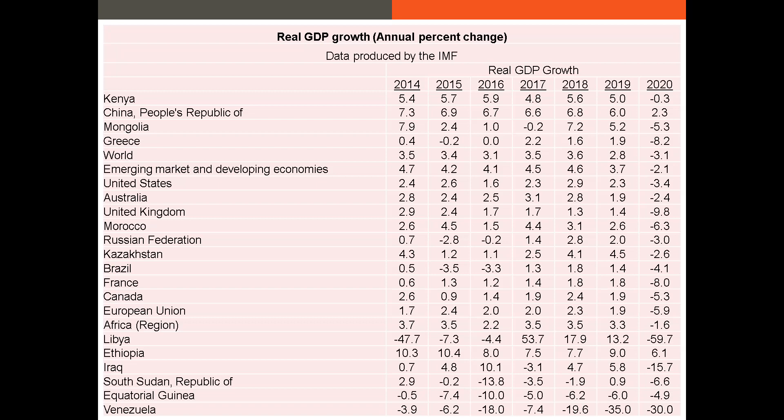I've collected data from the IMF's website. You can learn a lot about a country's economy by looking at the year-over-year change in GDP, since it represents the total value of all finished goods and services produced in the country. Let's start with Mongolia. In 2014, the country had a GDP growth rate of 7.9%. From 2010 to 2014, the Mongolian economy averaged an 11.28% GDP growth rate, largely due to rapid growth in mining activity. However, because this growth was export-based, it was sensitive to changes in commodity prices. When demand from China declined, Mongolia's mining sector slowed, and we see a decrease in real GDP growth after 2014.